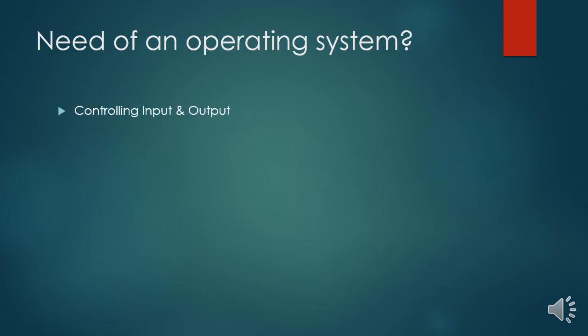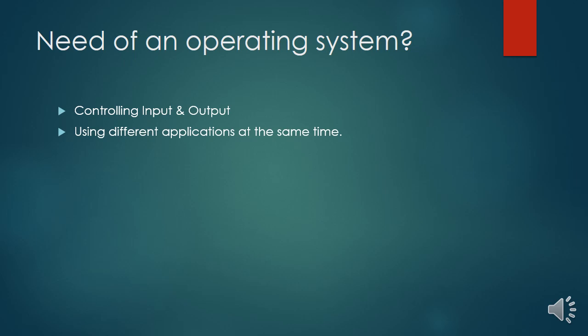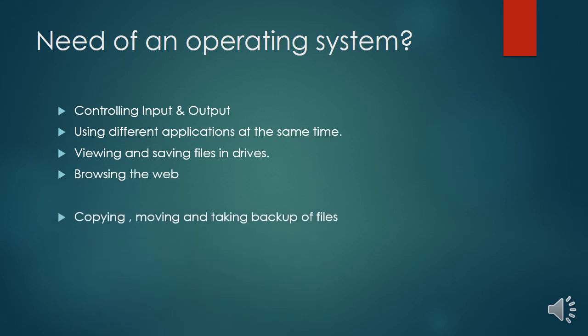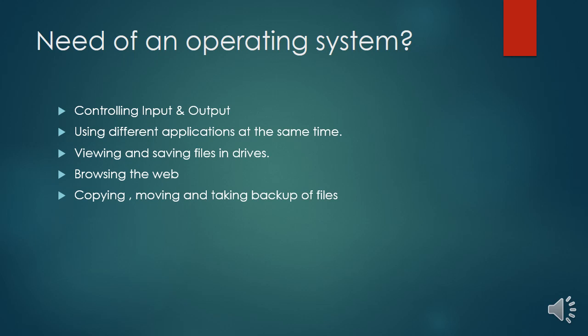The need for an operating system includes controlling input and output and using different applications at the same time — which is why we call it multitasking. For example, we can copy files while also playing music. Other needs include viewing and saving files, browsing the web, and copying, moving, or taking backups of files in case of a complete system failure.